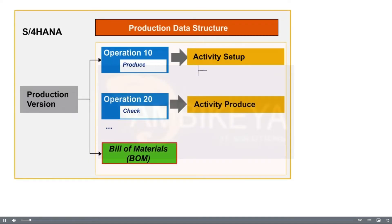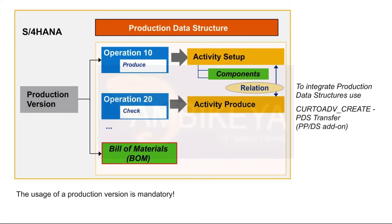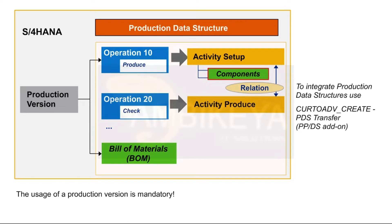Routing and BOM are used to describe production. For this reason, BOM components can be assigned to a certain operation. You can then plan the procurement of these materials at the beginning of the particular operation. Components are assigned in the routing. BOM components that are not explicitly assigned are considered to be assigned to the first operation.